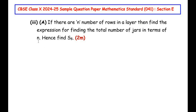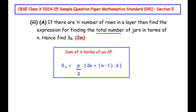If there are n number of rows in a layer, find the expression for the total number of jars in terms of n, and hence find S8. We need to find a general expression for the total number of jars and then find S8. We use the sum of n terms of an AP formula: Sₙ = (n/2) × [2a + (n−1)×d].